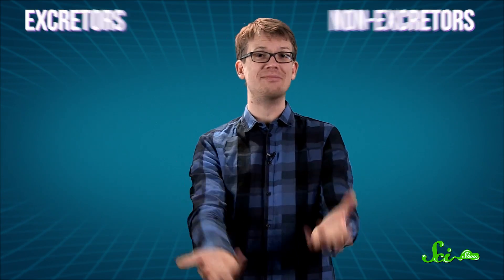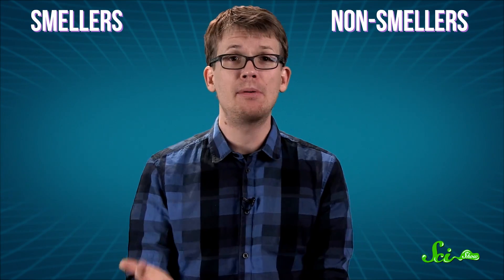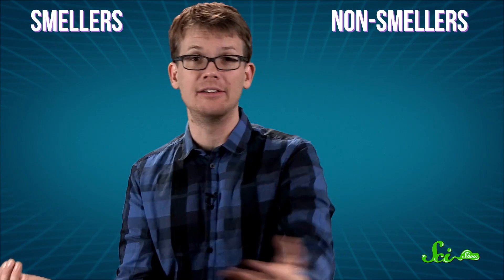It turned out that people were either excreters or non-excreters, and they could either be smellers or non-smellers. So some people produce smelly urine but can't smell it, and some people produce the smelly urine and can smell it—I'm one of those. And some people don't produce it, but they can detect traces of asparagus in other people's pee.